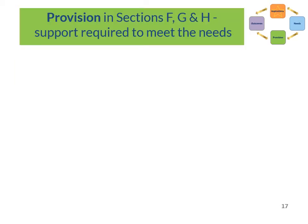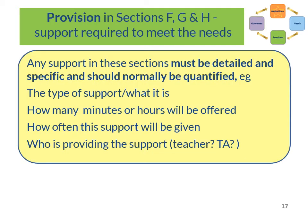There are also three sections in the plan for provision — the support your child or young person will need: Section F for special educational support, Section G for health support, and two sections in H for social care support. Any support in these sections must be detailed and specific and should normally be quantified. For example, this would make clear the type of support being offered, how many minutes or hours of support will be offered, how often the support will be given, and who will be providing it — whether a teacher, a teaching assistant or another practitioner.